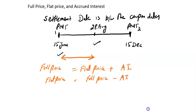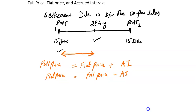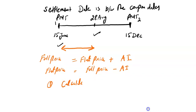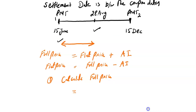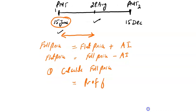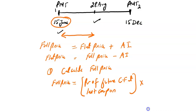The convention is: first calculate the full price. Full price equals the present value of future cash flows at a given yield. For example, if you want to value the bond on 28th August, you calculate the bond price on 15th June — that is the present value of future cash flows at the last coupon date. You then multiply this by (1 + yield)^(t/T), where the exponent accounts for the days between 28th August and 15th June.